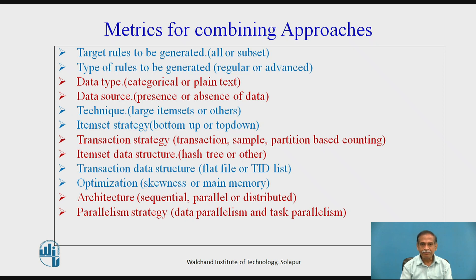The metrics for combining data sets include: target rules — all or a subset of all data; types of rules — regular or advanced; data types — categorical or plain text; data source — presence or absence of data, which may contribute to missing data; techniques — large item sets or others; item strategies — bottom-up or top-down; transaction strategies — transaction samples; partitioning-based counting; and item data structures such as hash tree or others.